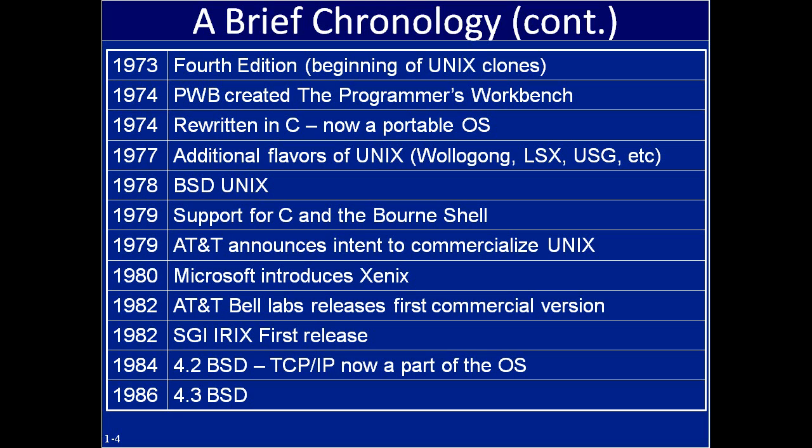The next major thing was in 1978 when BSD Unix came along, and this was a huge development. AT&T's version is commonly referred to as System 5 — you'll often see it referenced as SVR4, for System 5 Release 4 — and that was a long-running release developed in New Jersey. It was a good system, and a lot of what DOS is today was developed based upon the original Unix platform.